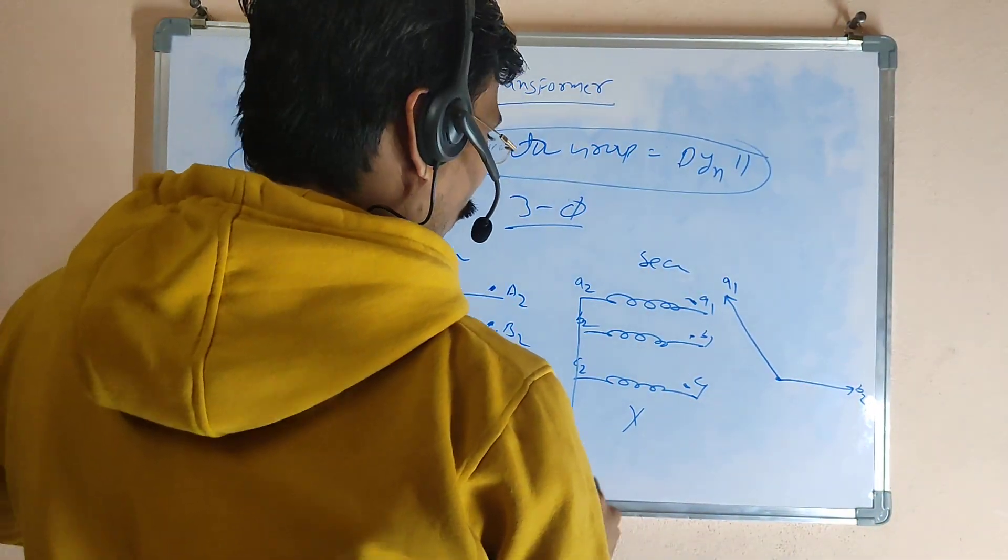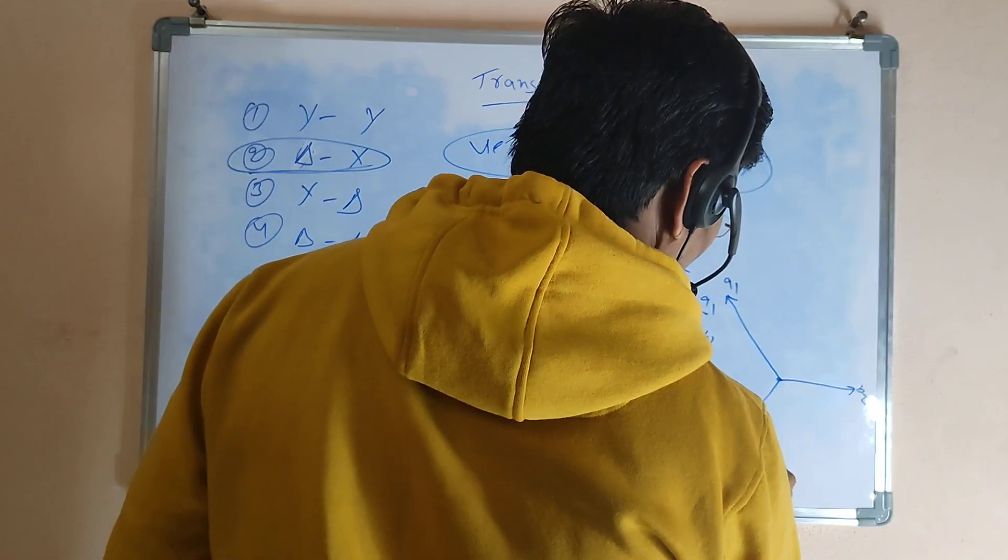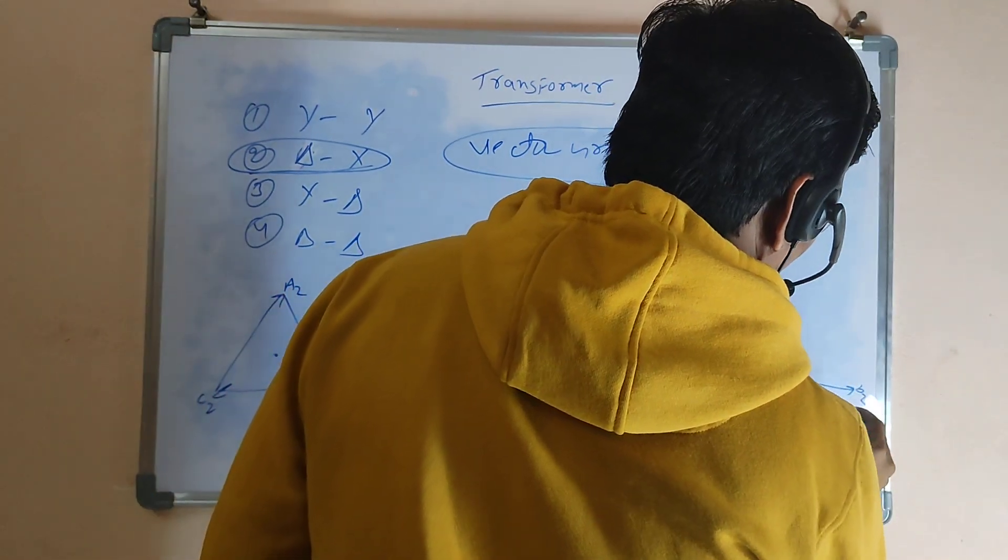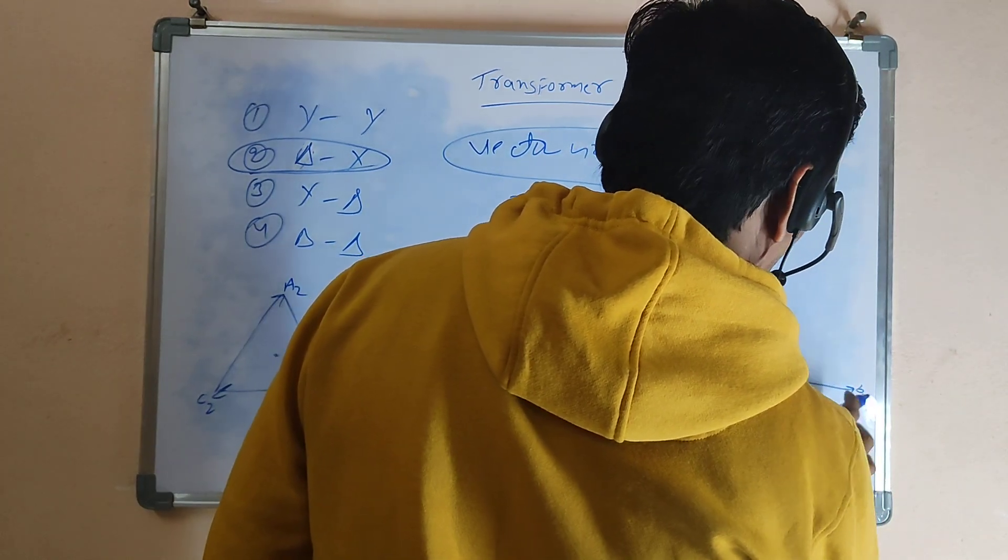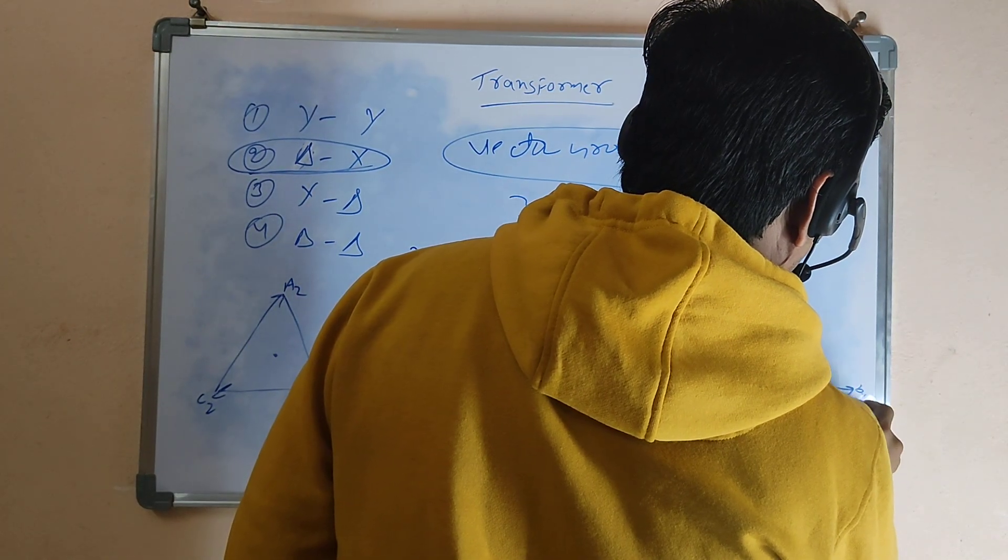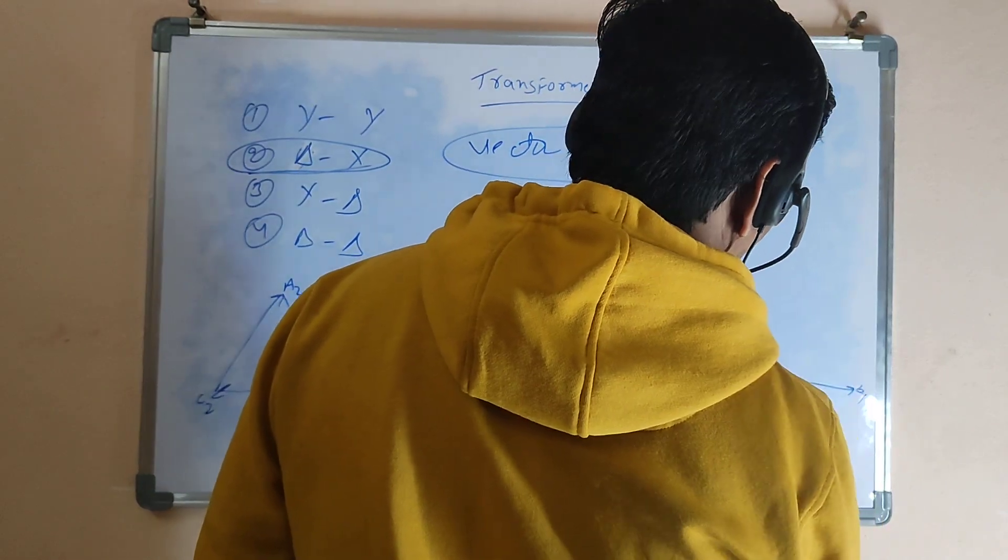This is C2, this is A1, B1, C1. Now we label: this is called A1, this is called B1, this is called C1.